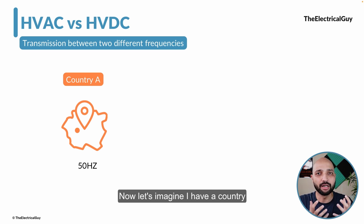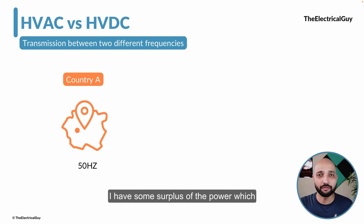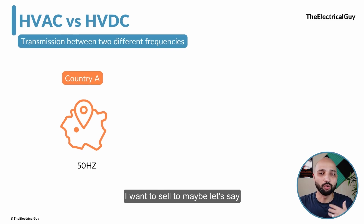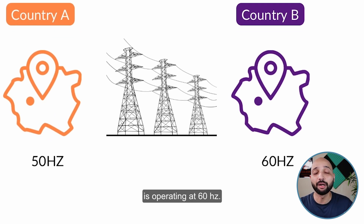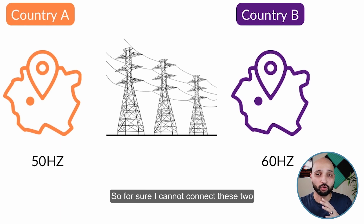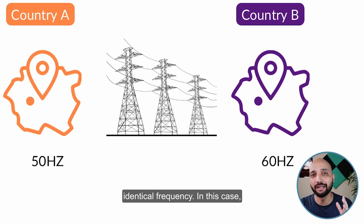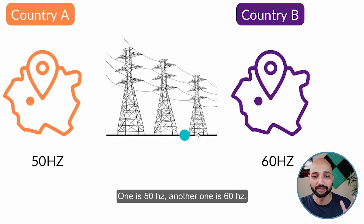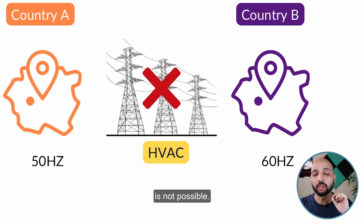Let's imagine I have a country A which is operating at 50 Hz and I have some surplus power which I want to sell to my neighboring country B, which is operating at 60 Hz. I cannot connect these two different power systems using high voltage AC transmission, because one fundamental requirement of connecting two power systems is to have identical frequency. Here, one is 50 Hz and the other is 60 Hz, so with HVAC this connection is not possible.